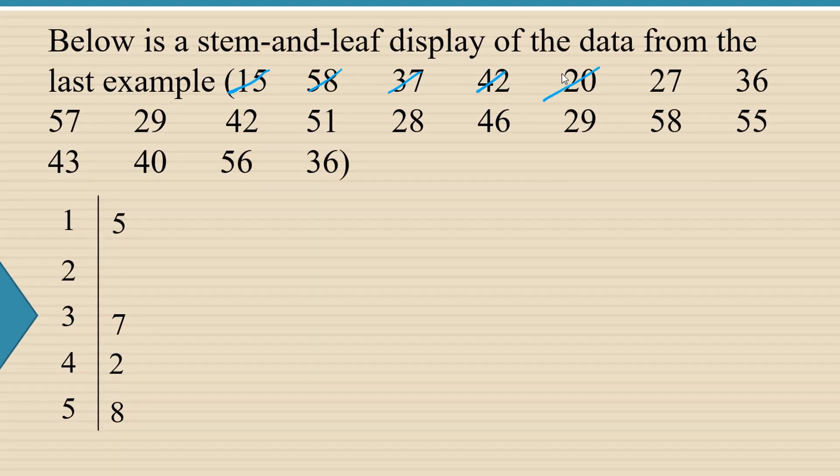The next number is 20, so we're going to place a 0 next to the 2. And the next number is 27, so we're going to place a 7 in the 2 row. So it's going to go next to that 0 for the 20. And then we're going to continue in this manner.